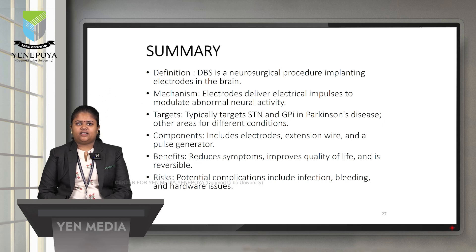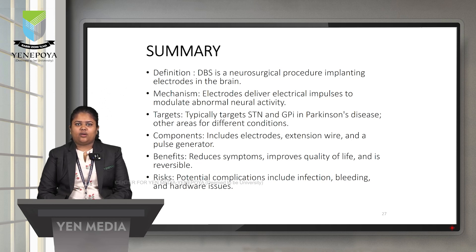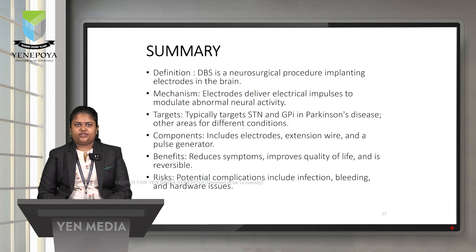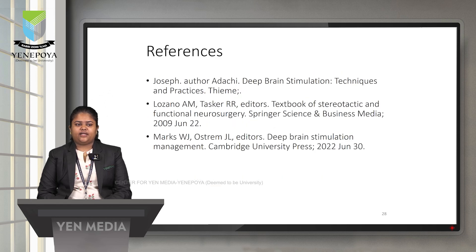In summary, Deep Brain Stimulation is a neurological procedure involving implantation of electrodes in the brain. The mechanism delivers electrical impulses to modulate abnormal neural activity. Targets include the STN and GPi in Parkinson's disease, with different targets for other conditions. Components include electrodes, extension wire, a pulse generator, and the neurostimulator. Benefits include reduced symptoms, improved quality of life, and reversibility. Risks include potential complications such as infections, bleeding, and hardware issues. Thank you.